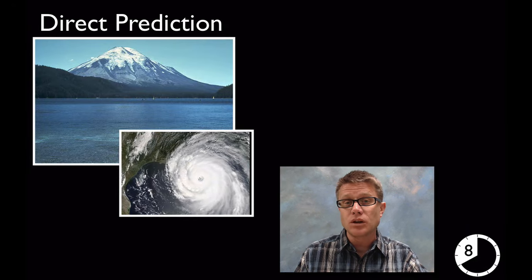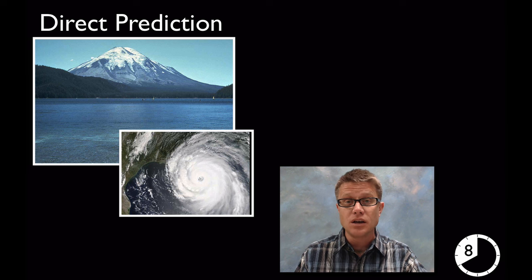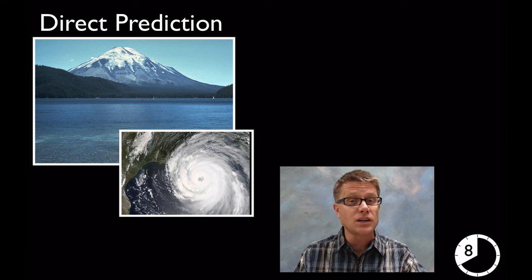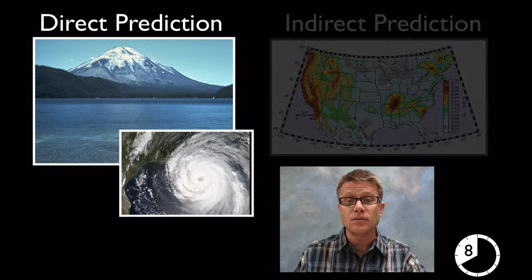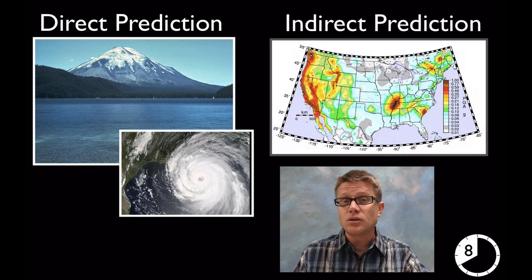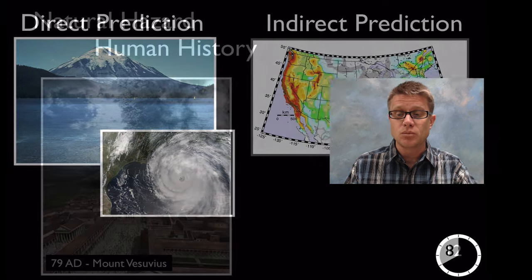As you move into middle school, start talking about natural hazards and how they can be predicted. We can make direct predictions by either watching the earth in the case of a volcano or watching the storm in the case of a hurricane. Then we can do indirect prediction — finding areas where we're more likely to have earthquakes and using those to prepare.